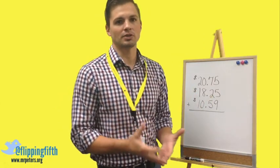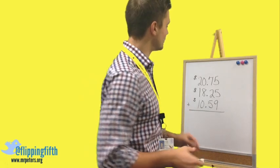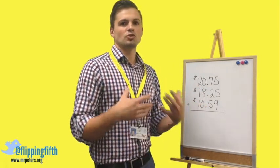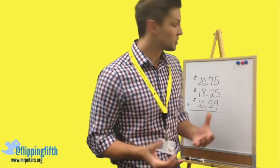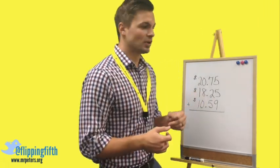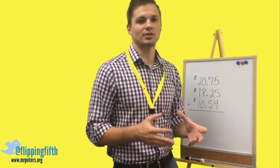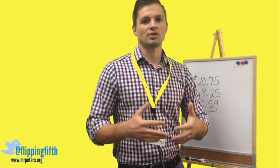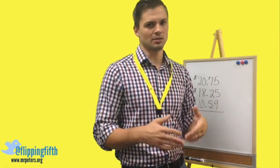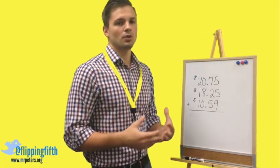We're going to use two tools — two properties of addition — to solve these types of problems. Say you just bought a new computer and want to buy some games. One game costs $20.75, the next costs $18.25, and the final game is $10.59. You want to figure out the total but you don't have a calculator or pencil and paper, so you need to do it all in your head.